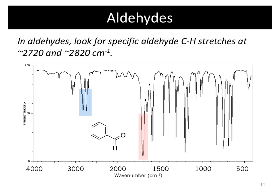To help differentiate carbonyls, you can look for other functionality. For example, an aldehyde still has your C=O stretch right around 1,700, but with aldehydes you also have a C-H stretch that shows up as two peaks — one at about 2,720 and one at about 2,820. If you see those two characteristic peaks, that helps confirm that your carbonyl is actually an aldehyde.